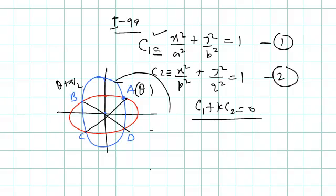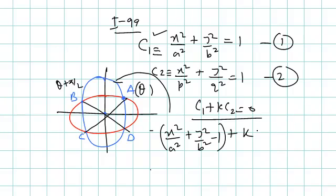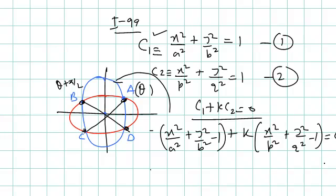C1 and C2 are two conics, and C1 + k·C2 = 0 is the equation of the family of conics whose members pass through all points of intersection of C1 and C2 — that is, through A, B, C, D. The pair of lines AC and BD are also members of this family, since they pass through all four points A, B, C, and D.